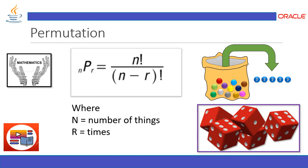Permutation is the different arrangements that a set of elements can make, if the elements are taken one at a time, some at a time, or all at a time. As you can see, when we have a bunch of colorful balls in a basket...